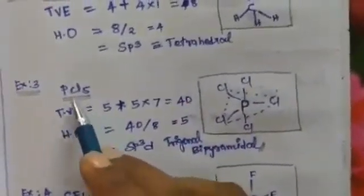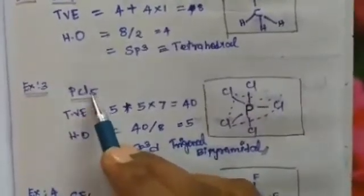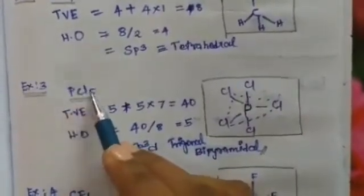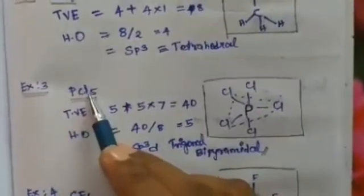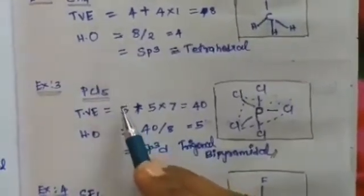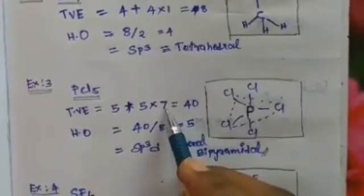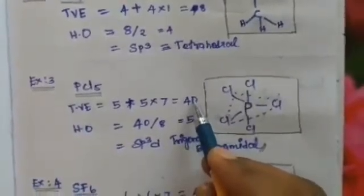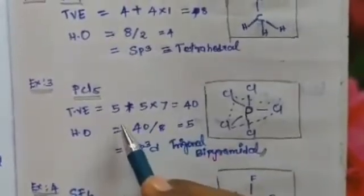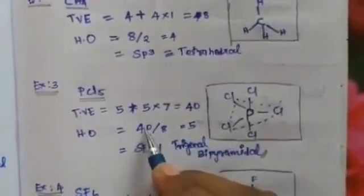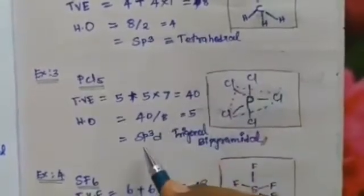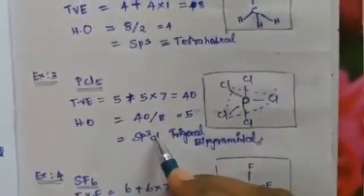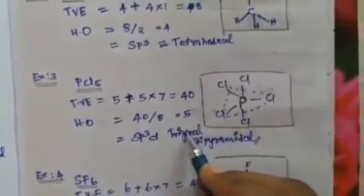Example 3: phosphorus pentachloride (PCl₅). Phosphorus is the central atom with 5 valence electrons. There are 5 surrounding chlorine atoms, each with 7 valence electrons. The total valence electrons equal 40. Since 40 is greater than 8, we divide by 8, giving 5 hybrid orbitals. Therefore hybridization is sp3d and geometry is trigonal bipyramidal.